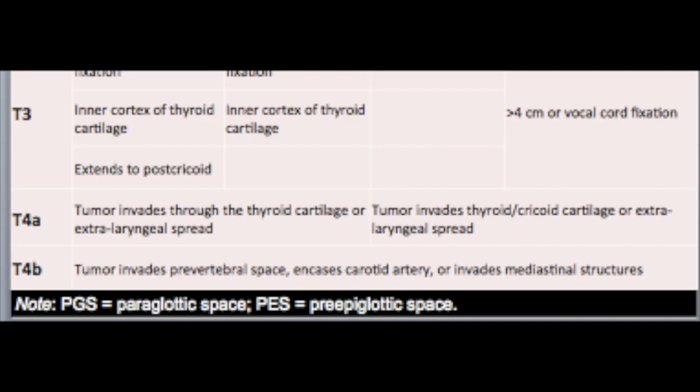Extralaryngeal spread invading the carotid artery or the prevertebral fascia constitutes T4B disease, and these patients are unresectable.